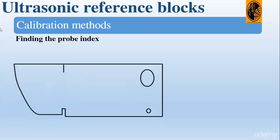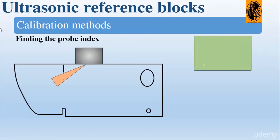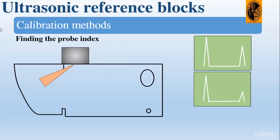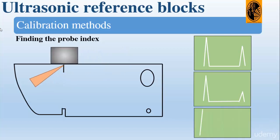We obtain the echo from the 100 millimeter radius and establish more than 50% full screen height using the gain control. We maximize the echo by moving the probe backward and forward, then mark a line on each side of the probe directly above the slot which indicates the center of the 100 millimeter radius. That will be the probe index — where the axis of the beam leaves the probe.